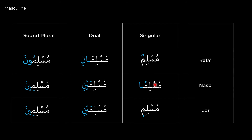For nasab in the singular, there's a fatha ending. For the dual it has an aini ending, and for the plural an ina ending. Interestingly, nasab and jar are actually the same for the dual and sound plural — both aini for dual and both ina for sound plural. They only differ in the singular: nasab is represented by a fatha and jar by a kasra. To tell the difference between their dual and sound plural, context will be key — knowing what triggers each state.